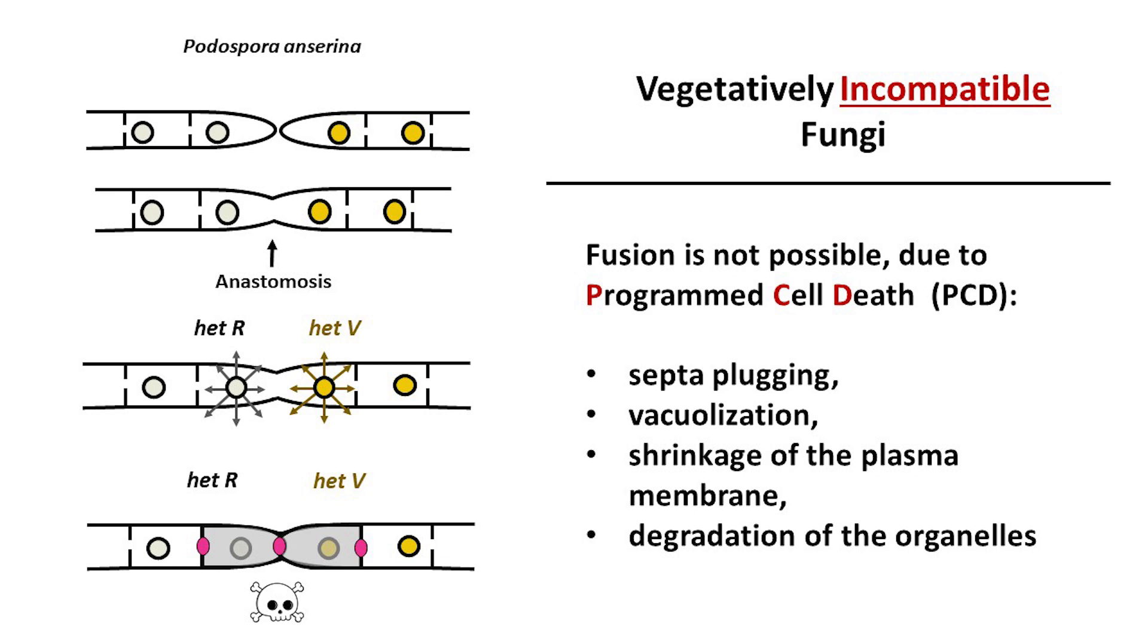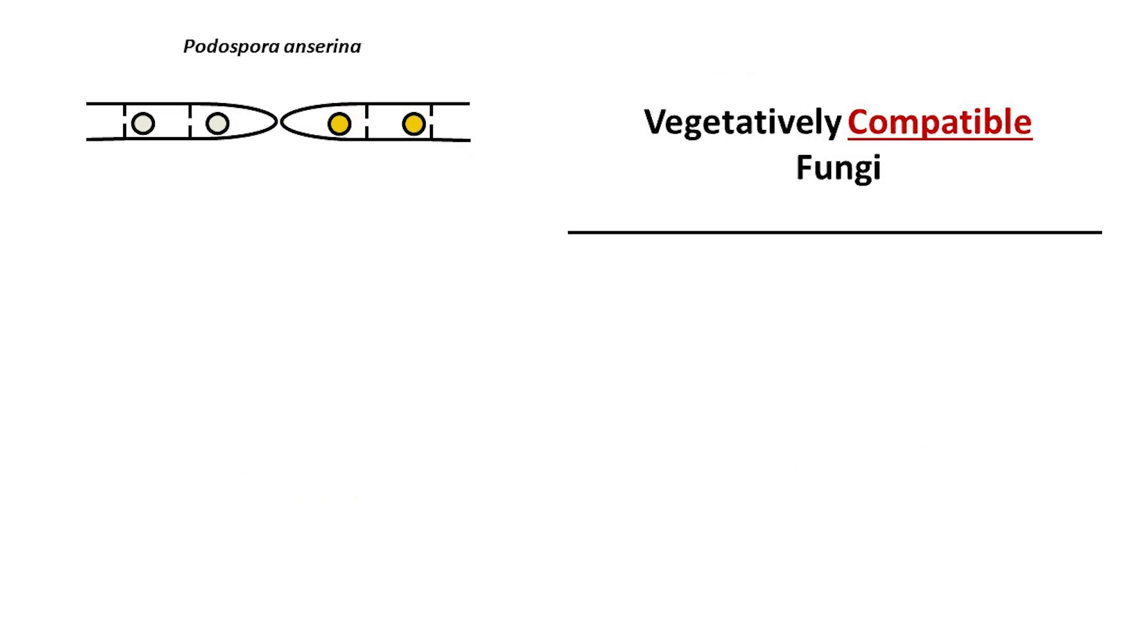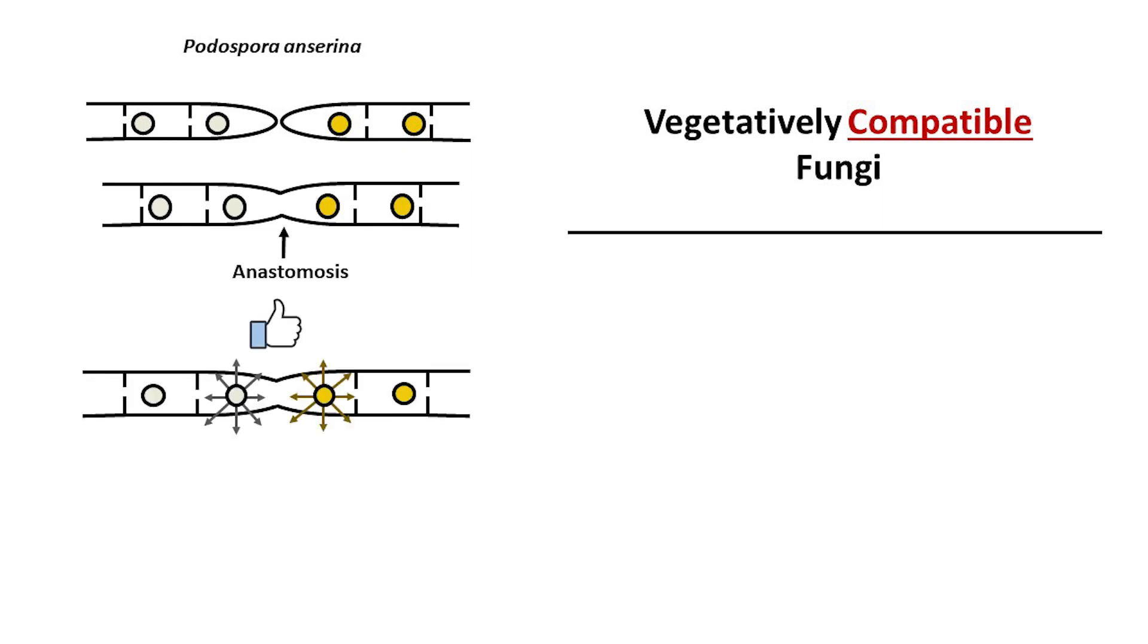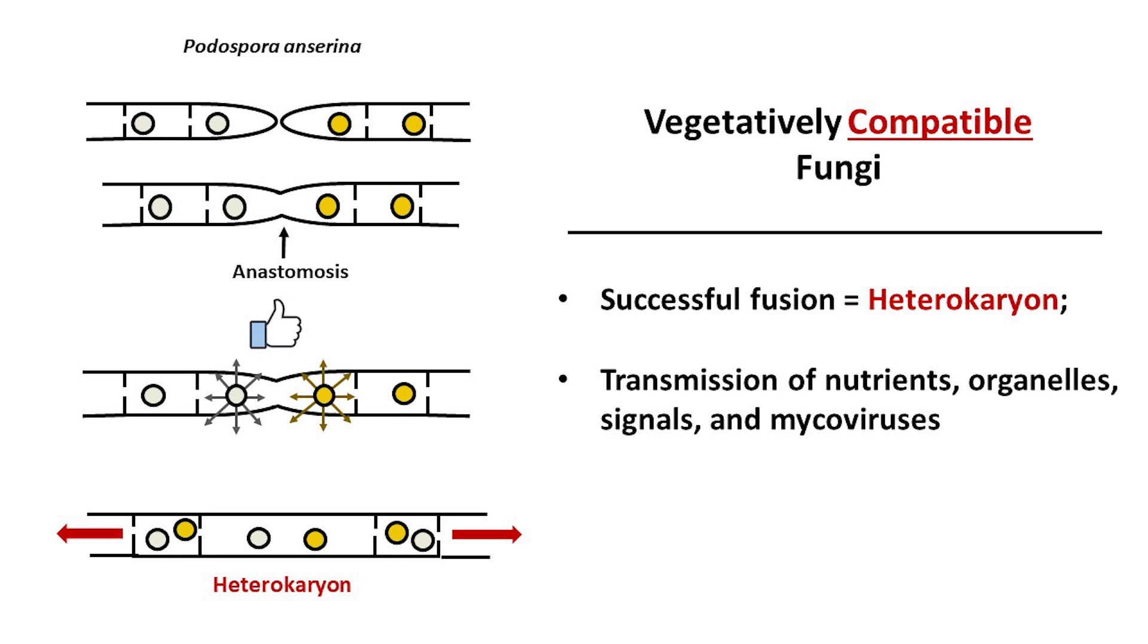In case of vegetative compatible fungi, anastomosis leads to successful establishment of heterocarion and exchange of cytoplasm, transmission of nutrients, organelles, signals, and even microviruses.